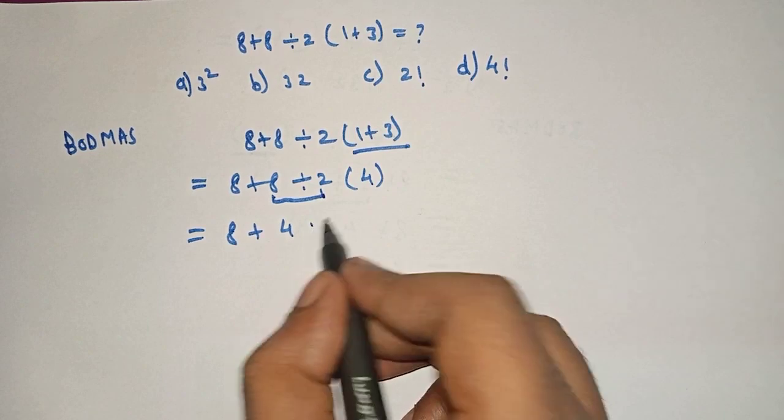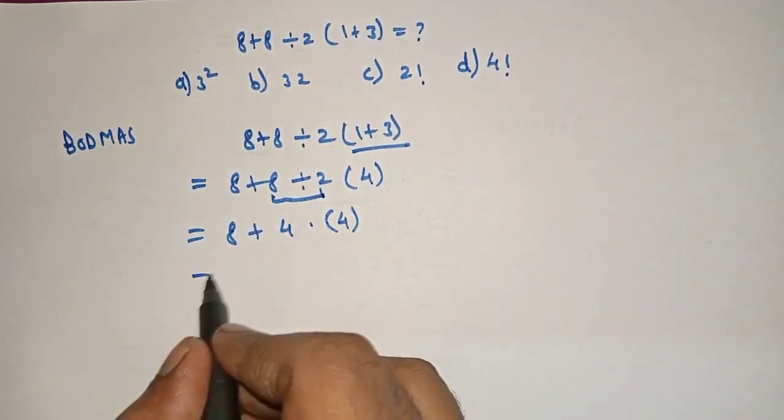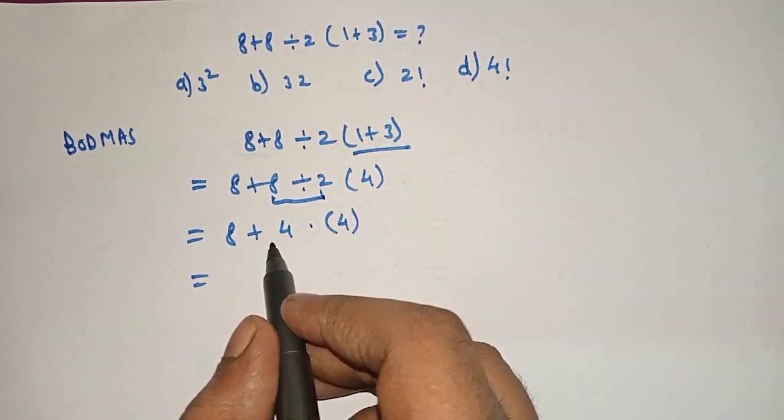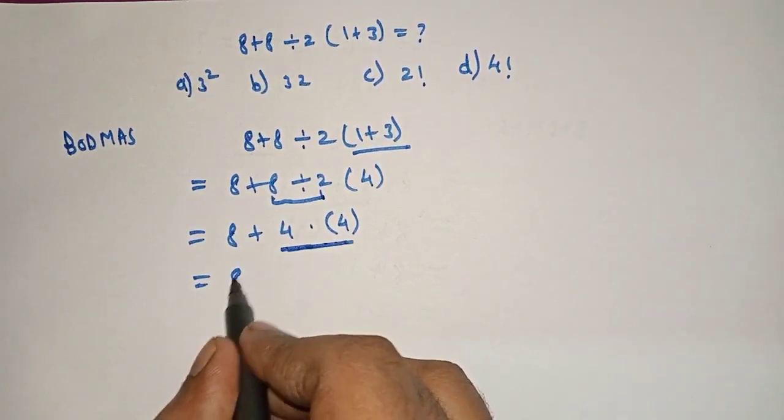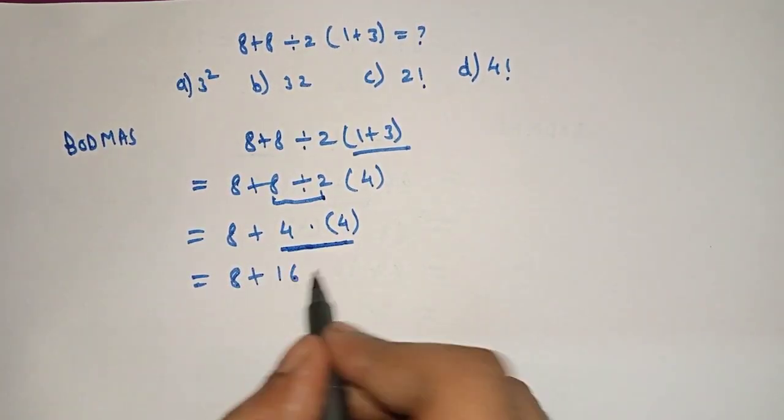Therefore, 8 plus 8 by 2 is what? 4 into 4. Here we will solve this term first. 8 plus 4 into 4 is 16.